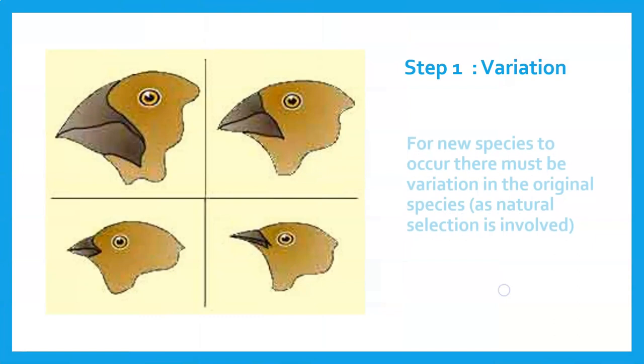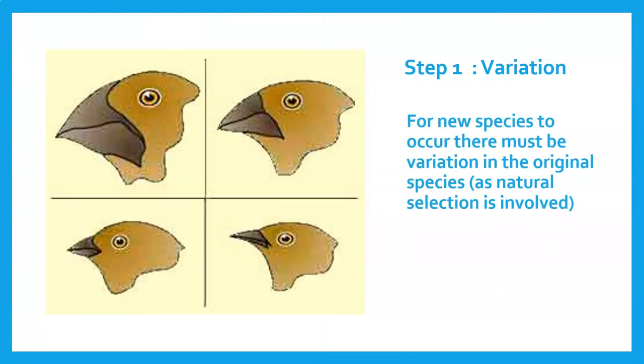First of all, variation. We know about variation. For a new species to occur, there must be differences in the original species. When you think about Darwin's finches, they had those different beak structures.